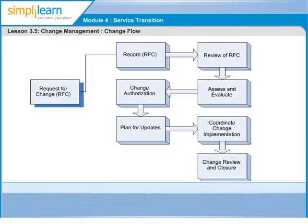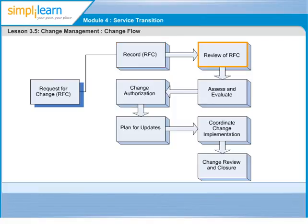The change management process starts with a Request for Change, or RFC in short. The RFC is a record in the change management system that allows information to be captured and tracked through to completion. The RFC is logged, and an initial review is performed to filter RFCs — for example, if it is incomplete or incorrectly routed.